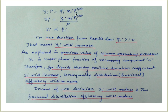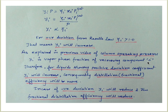For non-ideal liquid, y_i equals gamma_i * x_i * P_i_sat divided by P. So y_i is proportional to gamma_i. For positive deviation, gamma_i greater than 1 means y_i increases. For negative deviation, gamma less than 1 means y_i decreases. Since y_i is the vapor phase fraction of recovering component i at the top of the column, positive deviation increases distillation fraction and efficiency, while negative deviation reduces them.